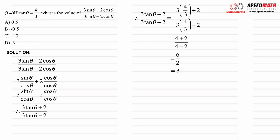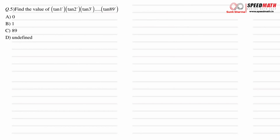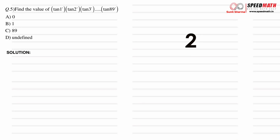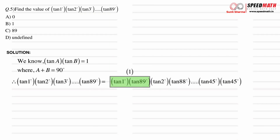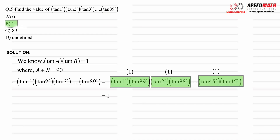This next question is very interesting. We need to find the value of tan1° × tan2° × tan3° × … × tan89°. The key identity is: tan A × tan B equals 1 when A plus B equals 90°. So we pair tan1° with tan89°, tan2° with tan88°, and so on — each pair gives a product of 1. The remaining middle term is tan45°, which also equals 1. So the entire product equals 1. Option B is correct.